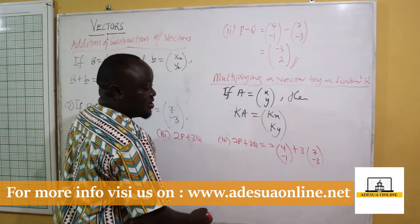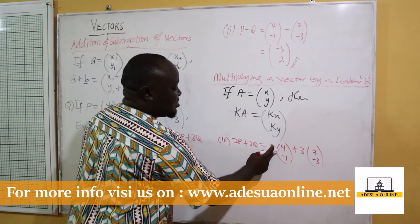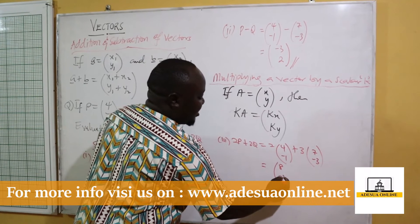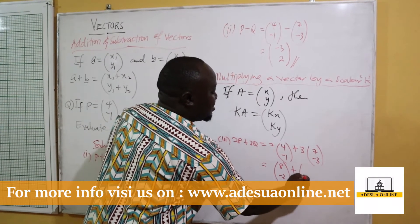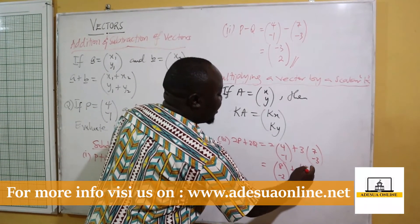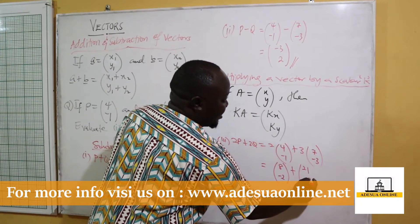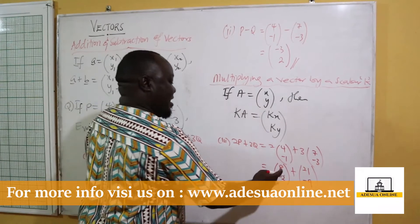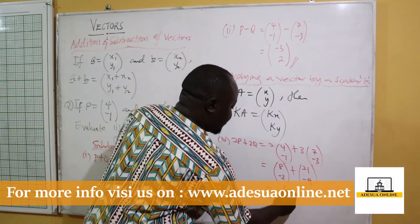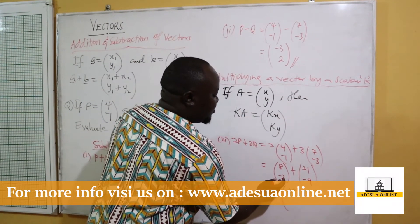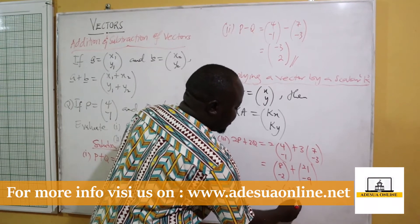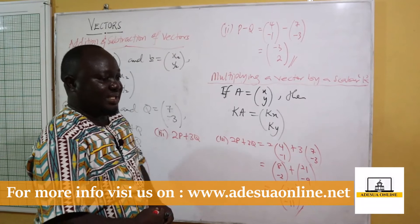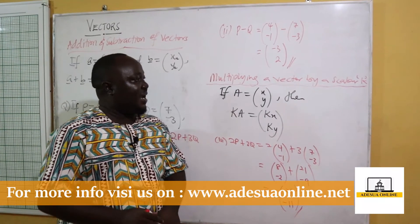Using the scalar multiplication: 2 times 4 gives 8, 2 times negative 1 gives negative 2, plus 3 times 7 gives 21, and 3 times negative 3 gives negative 9. Adding the components: 8 plus 21 equals 29, and negative 2 plus negative 9 equals negative 11. So 2p plus 3q equals (29, -11).